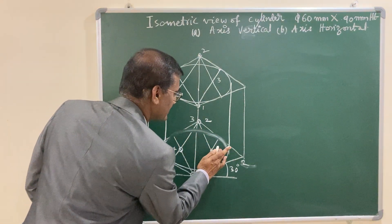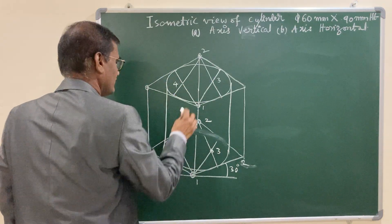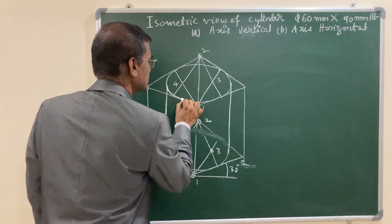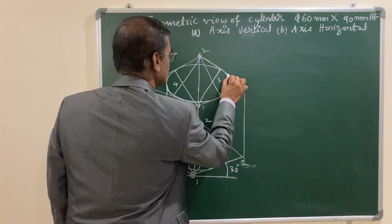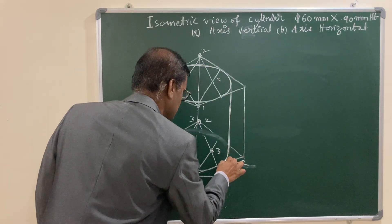We do not represent the hidden edges, you can erase it. Now the view is completed. You can draw with HB pencil and highlight the things.